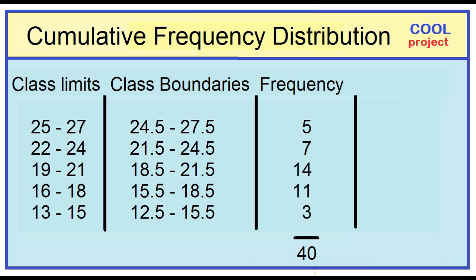Cumulative frequency distribution. Cumulative frequency distribution is a table showing the cumulative frequencies. There are two types of cumulative frequency distributions: less than cumulative frequency distribution and more than cumulative frequency distribution.